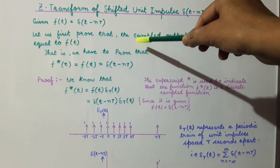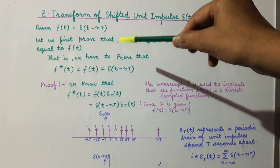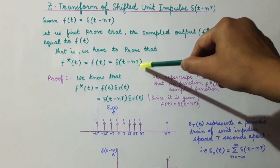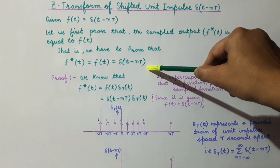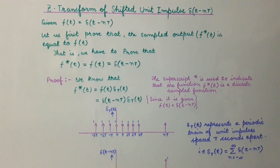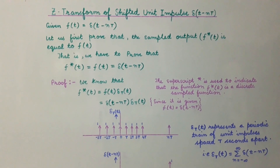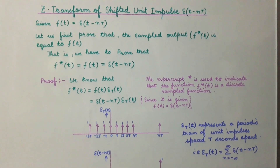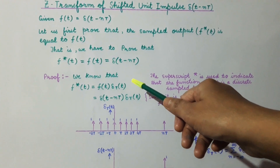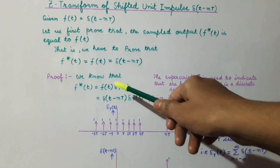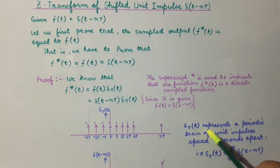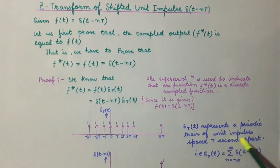First we will prove that the sampled output f*(t) is equal to f(t), that is delta(t - nT). From the chapter on Z transform, we saw that whenever a continuous function f(t) is fed to a sampler, we get a sampled output denoted by f*(t), which is a discrete sampled function. It can be written as f*(t) = f(t) · δ_T(t), where δ_T(t) represents a periodic train of unit impulses spaced T seconds apart from each other.